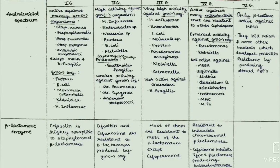Now we will discuss the antimicrobial spectrum. The first generation cephalosporins are active mainly against gram-positive organisms like Staph aureus, Staph epidermidis, Strep pneumoniae, Strep pyogenes, and anaerobic streptococci, except MRSA and Bacteroides fragilis. They are also active against gram-negative organisms like Proteus, E. coli, Moraxella catarrhalis, Klebsiella, and H. influenzae.